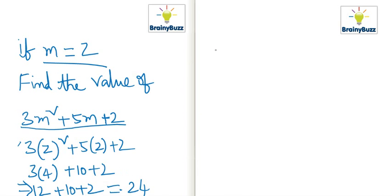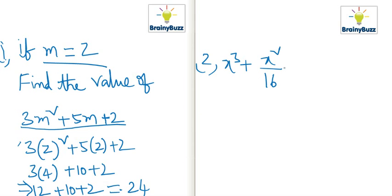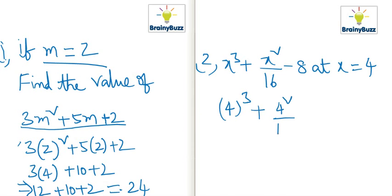Another example: find the value of x cubed plus x squared by 16 minus 8, at x equals 4. First, substitute the values: 4 cubed plus 4 squared by 16 minus 8. That gives 64 plus 16 by 16 minus 8, which is 64 plus 1 minus 8.